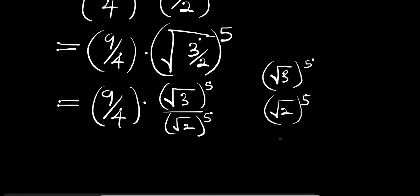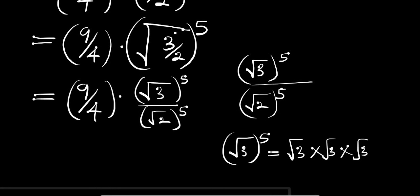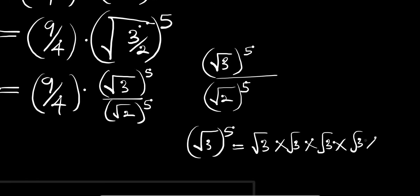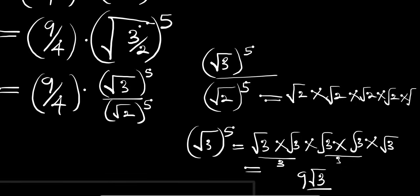For (√3)^5: √3 × √3 × √3 × √3 × √3 = (√3 × √3) × (√3 × √3) × √3 = 3 × 3 × √3 = 9√3. For (√2)^5: √2 × √2 × √2 × √2 × √2 = (√2 × √2) × (√2 × √2) × √2 = 2 × 2 × √2 = 4√2.